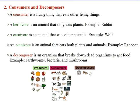A consumer is a living thing that eats other living things. We have three kinds of consumers. First, a herbivore — it's an animal that only eats plants. For example, the rabbit.